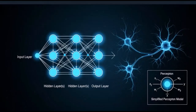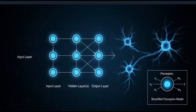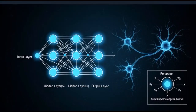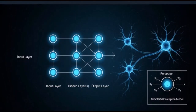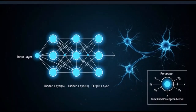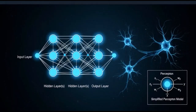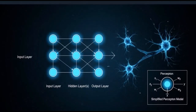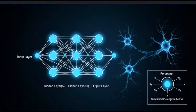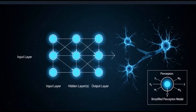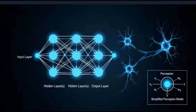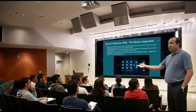On the left side of your screen, you can see a simplified example called a perceptron — the most basic form of a neural network, representing a single artificial neuron. It takes multiple inputs, similar to how a biological neuron receives signals from other neurons, processes them with associated weights, and then produces an output, often a simple binary decision.